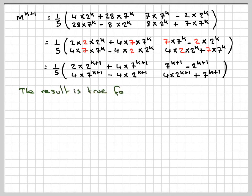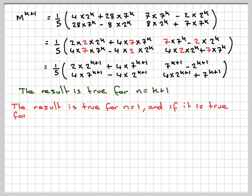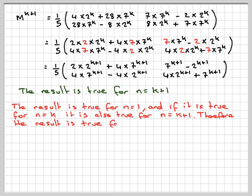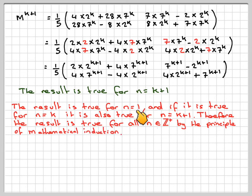Therefore, the result is true for n equals k+1. And therefore we write out the conclusion: the result is true for n equals 1, and if it's true for n equals k, it's also true for n equals k+1. Therefore the result is true for all positive integers n by the principle of mathematical induction — meaning if it's true for n=1, then it's true for 2, 3, and so on for all positive integers.